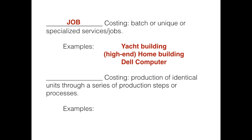High-end home building is another example. People come in and say this is the house I want to build, so it's a one-time deal — not producing thousands of the exact same house. Dell computer used to be where you would call in and tell them exactly what computer you wanted, they would build it for you. That would be an example of job costing.